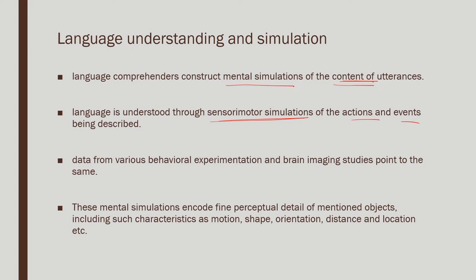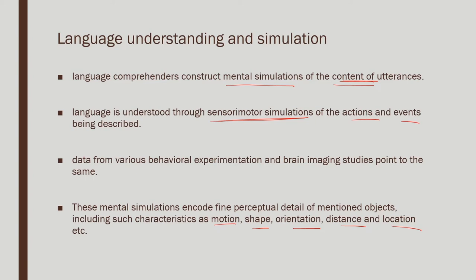Some of the finer perceptual details include motion, shape, orientation, distance, and location. When you are simulating even a simple object, that object may have its orientation, its shape, a location — close or far — and so on. These are the finer aspects of a particular scenario that could be simulated, and they have been looked at through various experimental paradigms.